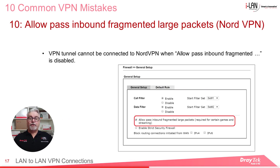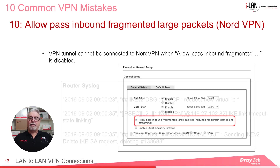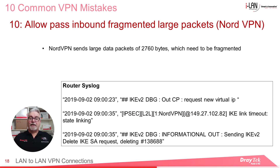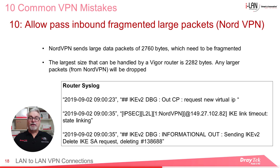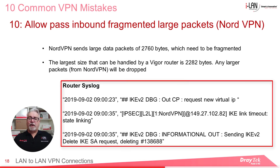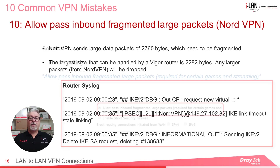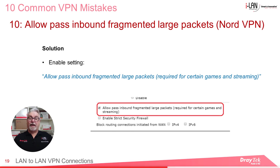The last item we'll look at is a firewall setting which allows you to pass inbound fragmented packets, which is required for certain games and streaming applications. Vigor routers can establish a VPN tunnel to NordVPN with IKE version 2 EAP protocol. It has been reported that the VPN tunnel cannot be connected to NordVPN when Allow Pass Inbound Fragmented is disabled in the router. NordVPN sends large data packets of 2,760 bytes which need to be fragmented. When Allow Pass Inbound Fragmented is unchecked on firewall general setup, the fragmented packets must be reassembled before being processed. The larger size that can be handled by a Vigor router is 2,282 bytes, so any larger packets from NordVPN will be dropped. This issue can be checked by examining the router syslog. The solution is to select Allow Pass Inbound Fragmented large packets as shown.